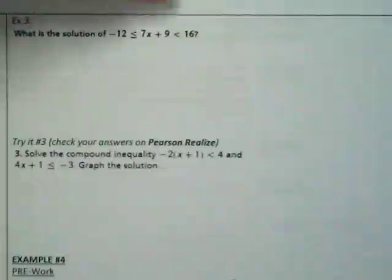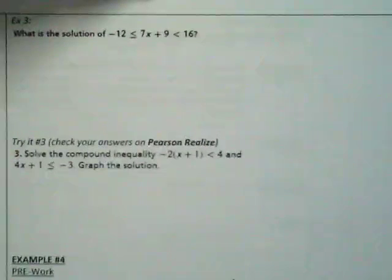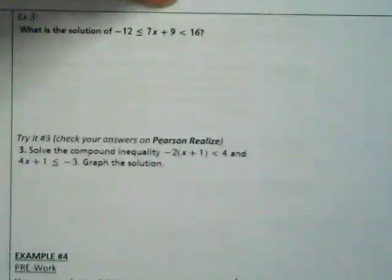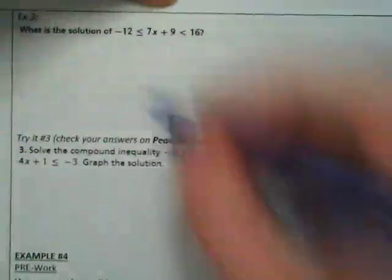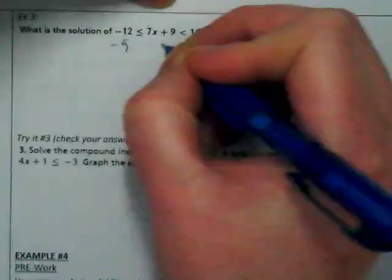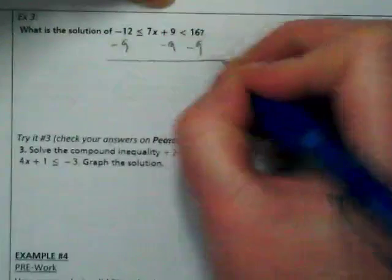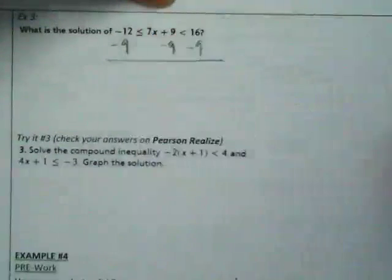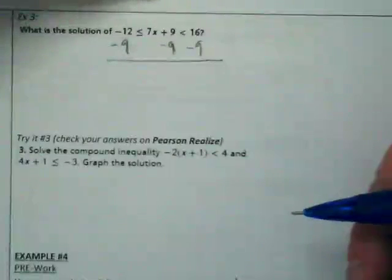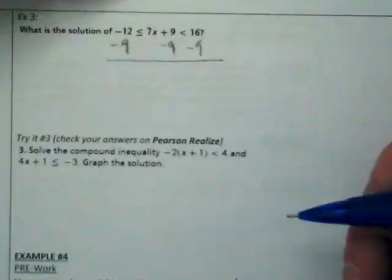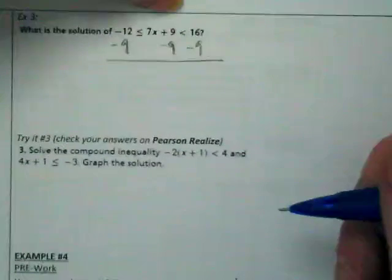What was our first action on those other two? Subtract the 9. What does it look like our first action is going to be here? But we're going to subtract the 9 from all three parts of this inequality. This is an and inequality written without the word and. What they have in common is put into the middle.